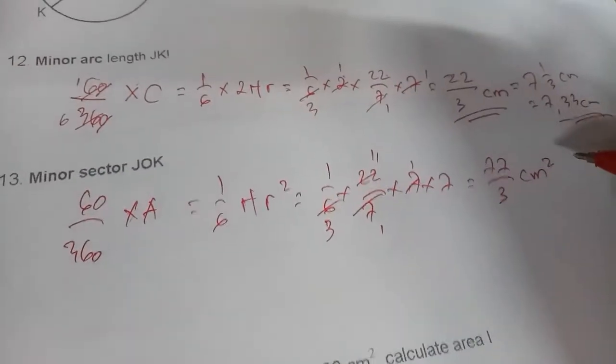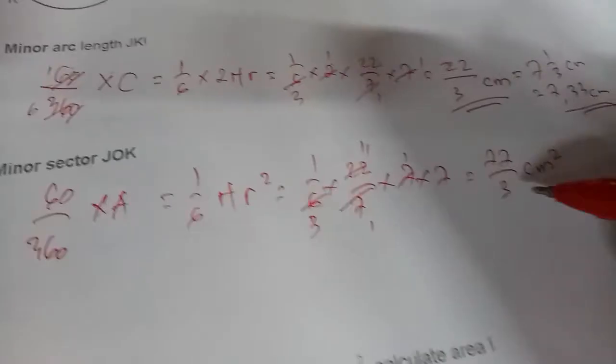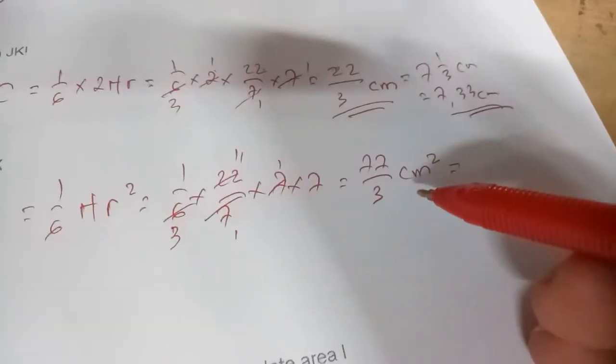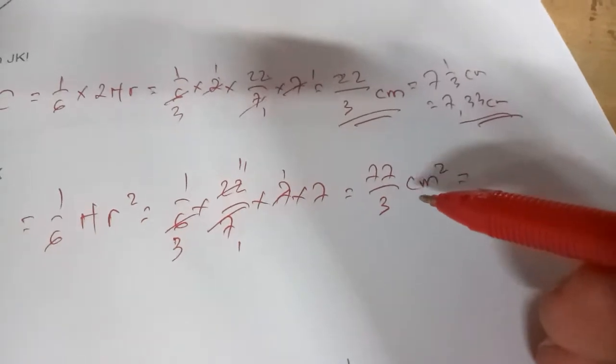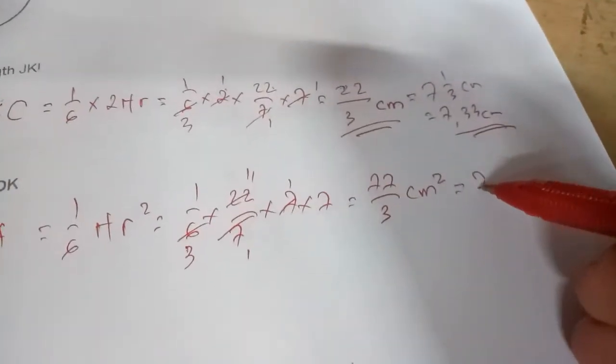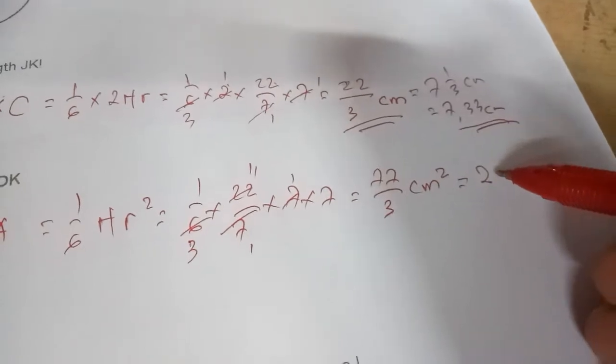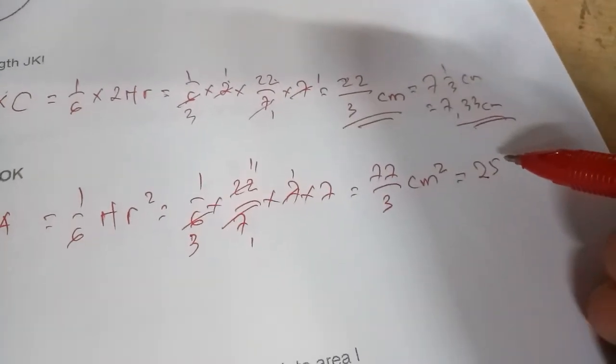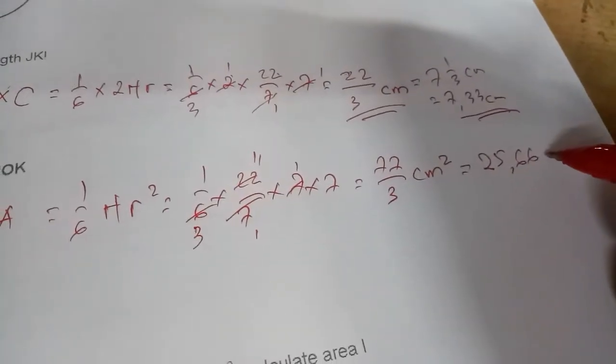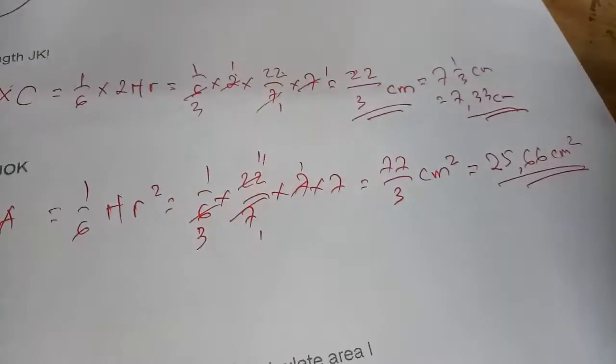Centimeters squared. Again, you can use the fraction or the decimal, but I recommend you use a fraction. So 77 divided by 3 is 25 and 2/3, or 25.66 centimeters squared. There you go.